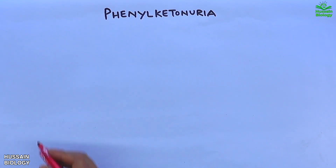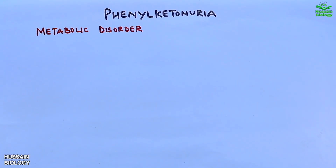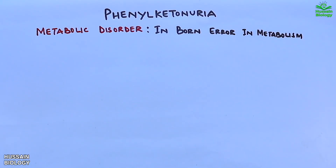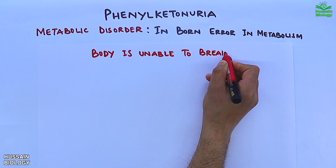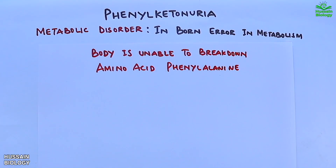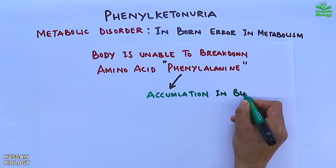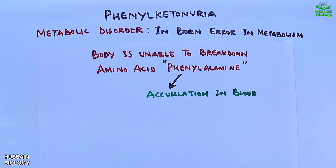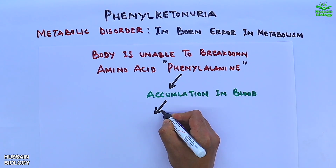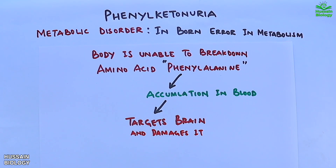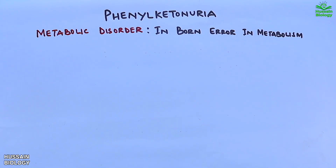Phenylketonuria is a metabolic disorder due to an inborn error in metabolism where the body is unable to break down the amino acid phenylalanine, which leads to accumulation of phenylalanine in blood. These elevated abnormal levels of phenylalanine in blood target the brain and damage it. First, let's see the normal mechanism in detail.